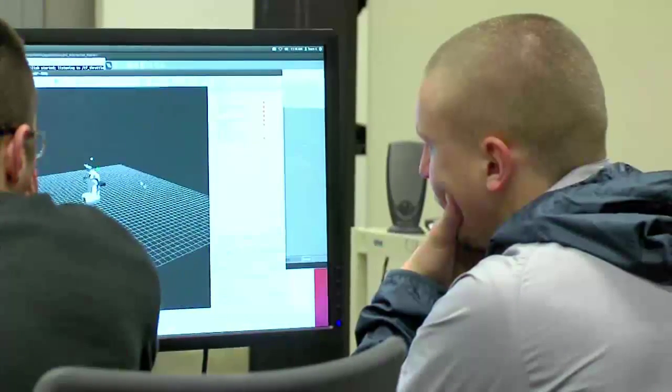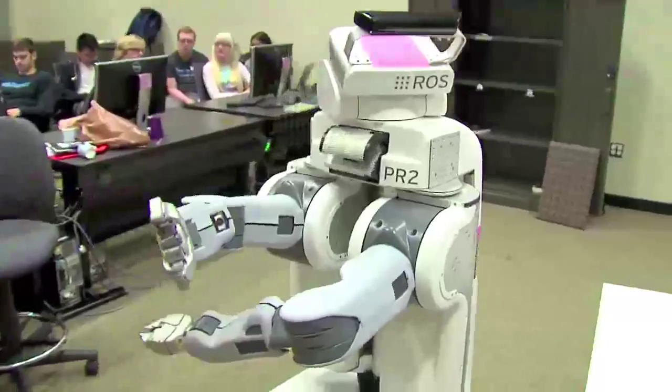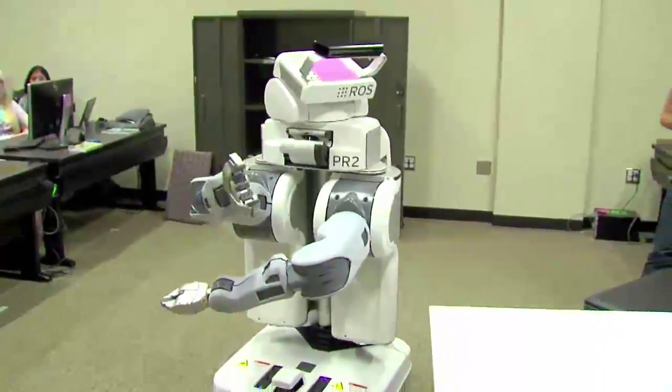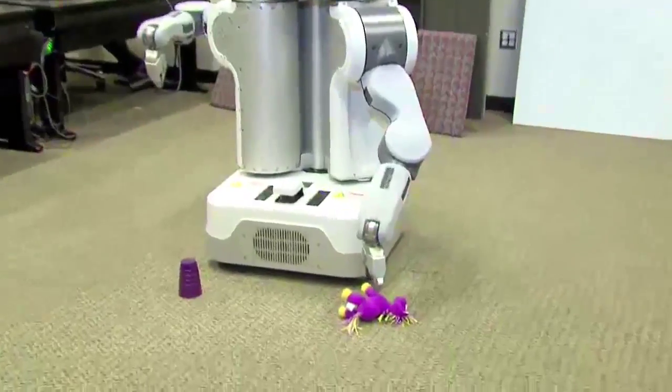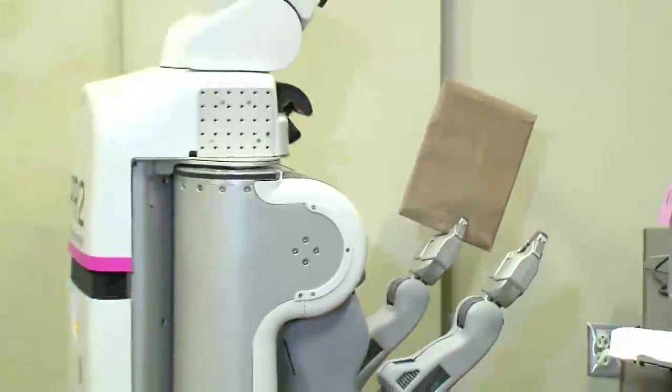So the students program a robot, which is a mobile manipulator called PR2, and they basically program it to do useful things like picking stuff off the floor or delivering mail around the building.